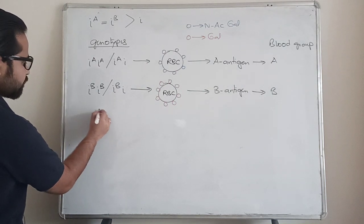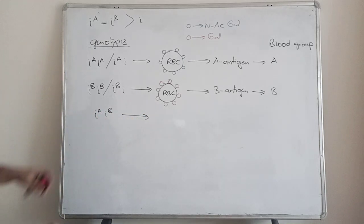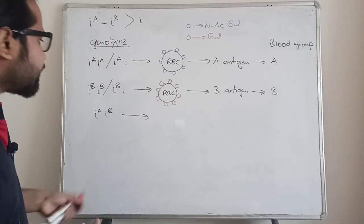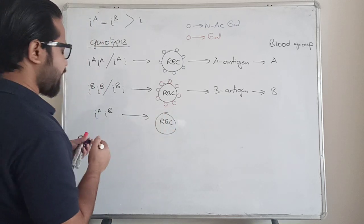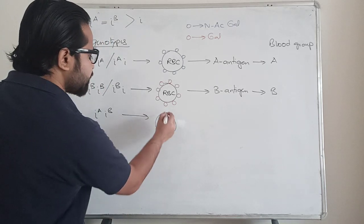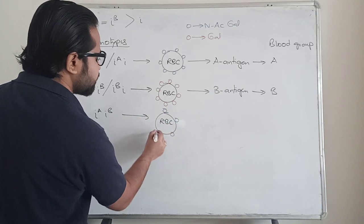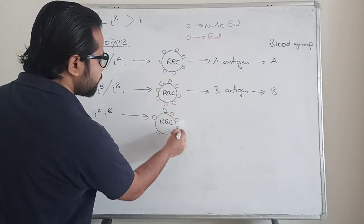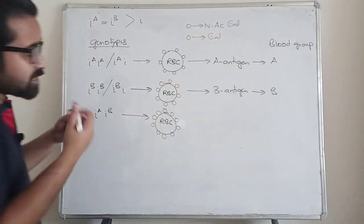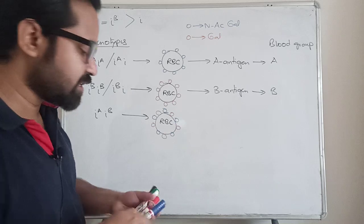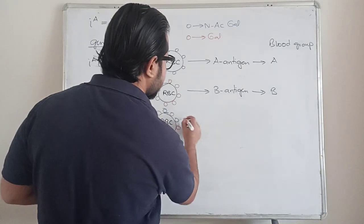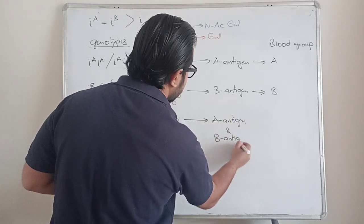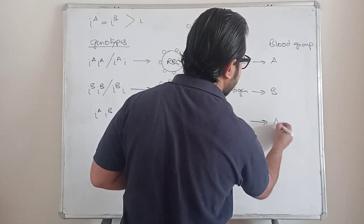Now imagine a situation where both I-A and I-B are present together. This is a heterozygous condition, but as I already told you, I-A and I-B are codominant — they are equally strong. So this RBC is going to have both N-acetylgalactosamine and galactose on its surface, because both alleles exert their phenotypes. That means it expresses both A antigen and B antigen at the same time, so the blood group is AB.